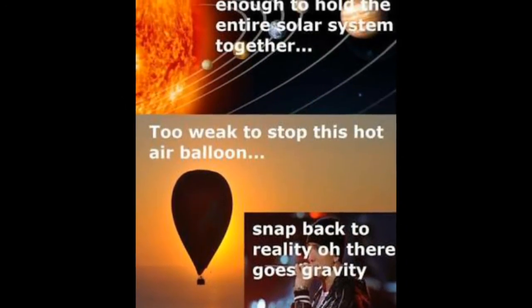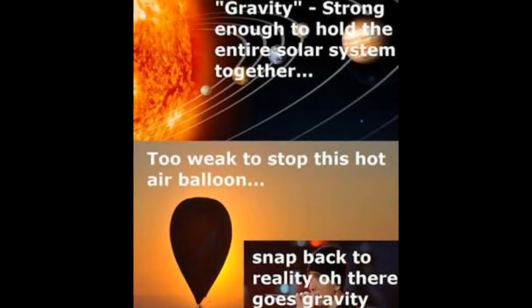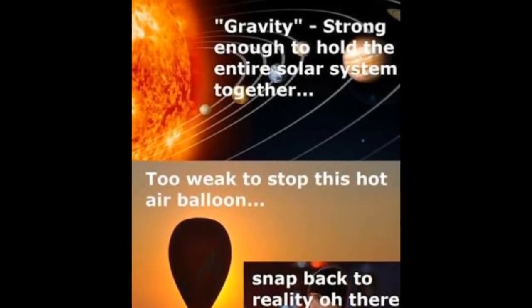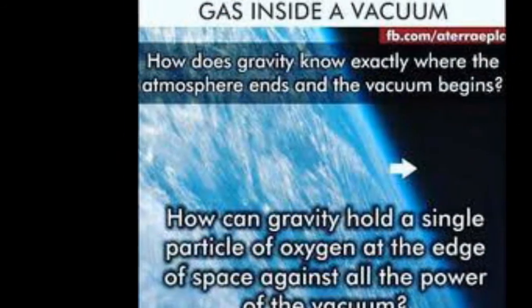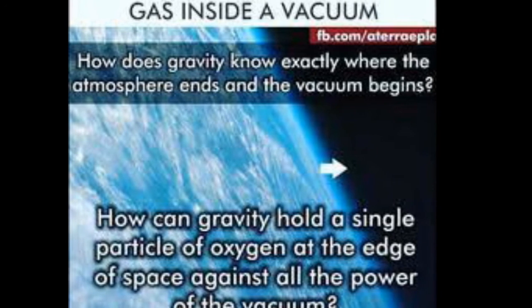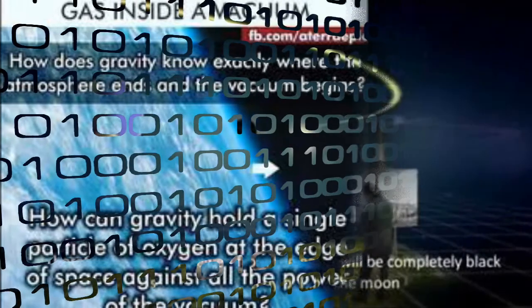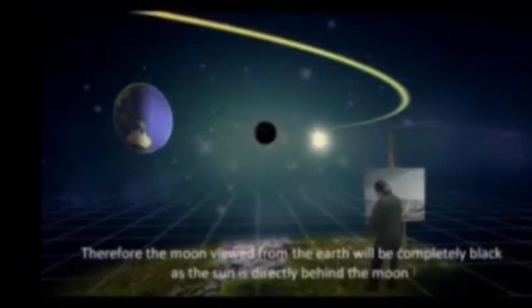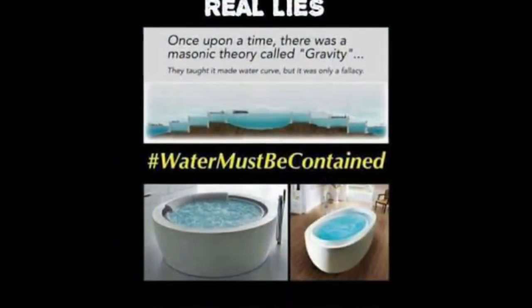Why do balloons float up? What makes a hot air balloon keep from falling from the sky? How do zeppelins or dirigibles float in the sky? How does a siphon work? If gravity is pulling everything to the center of the Earth, then why aren't we and everything else crushed to the ground and pulled to the center of the Earth? Why hasn't the Moon, or for that matter the Sun and other planets, fallen into the Earth? You think this would be an obvious one. Gravity cannot exist.